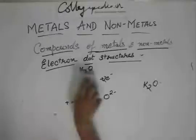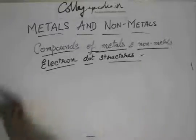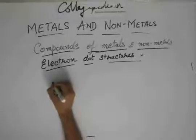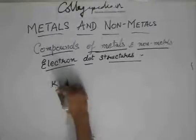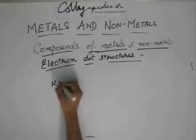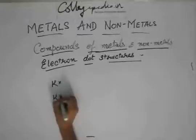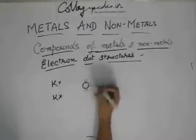And the electron dot structure will be K has only one, but we need two Ks. And oxygen has one, two, three, four, five, six.